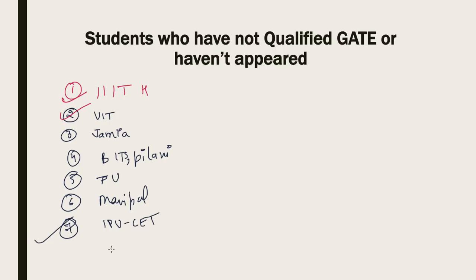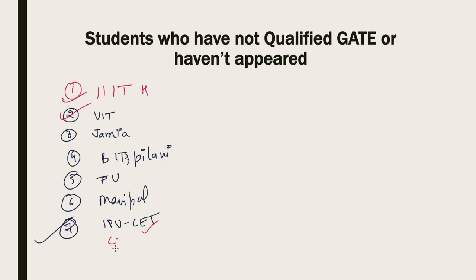Another option is IPU CET — for universities in Delhi, you can take admission through IPU CET, and some good colleges like C-DAC Noida accept this. C-DAC also recruits through GATE examination — if you have a rank less than 3,000, you can get C-DAC admission. If you missed GATE or didn't get a good rank, you can give the IPU CET examination and still get into C-DAC if seats are available.